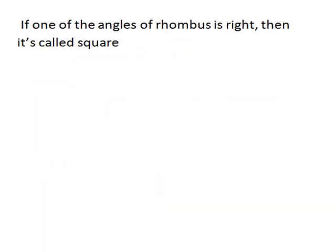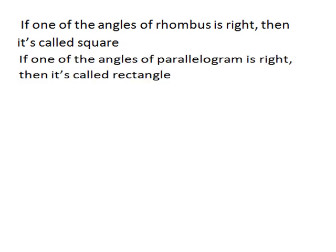This is a very important point: if one of the angles of a rhombus is a right angle, then it is called a square. Remember: if one of the angles of a rhombus is right, it is called a square — not a rectangle.